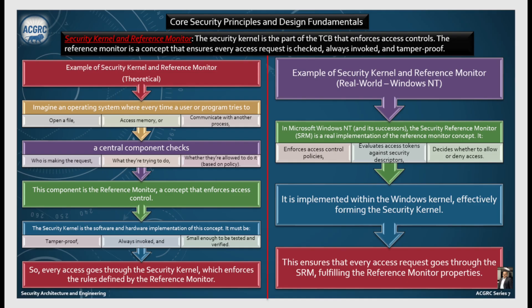In a real-world example, in Microsoft Windows NT and its successors, the Security Reference Monitor (SRM) is a real implementation of the reference monitor concept. It enforces access control policies, evaluates access tokens against security descriptors, and decides whether to allow or deny access. It is implemented within the Windows kernel, effectively forming the security kernel, ensuring that every access request goes through the SRM and fulfilling the reference monitor properties.